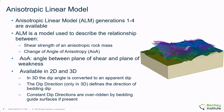ALM is a constitutive model that describes the shear strength of an anisotropic rock mass in relation to the change of angle of anisotropy, defined as the angle between the orientations of the plane of shear and the plane of weakness. This model was originally developed by Snowden Mining Industry Consultants in Perth, Australia in 2005, with implementations based on work by Ken Mercer published in 2013 and 2017. All four ALM models have been implemented in Plaxis LE and are available for use in both 2D and 3D numerical models.